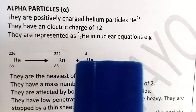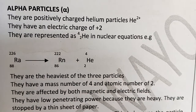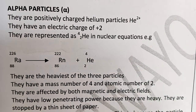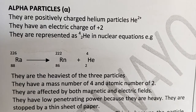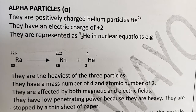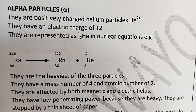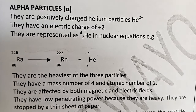When we write the nuclear equation, we don't use the alpha sign as-is, but we use He, which represents that particle. This is much easier particularly when balancing nuclear equations, because we balance using mass numbers rather than atoms.